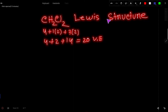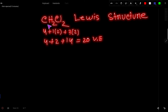Let's look at the CH2Cl2 Lewis structure, or Lewis dot structure, for CH2Cl2 dichloromethane. First, we have to find out the valence electrons for this molecule.